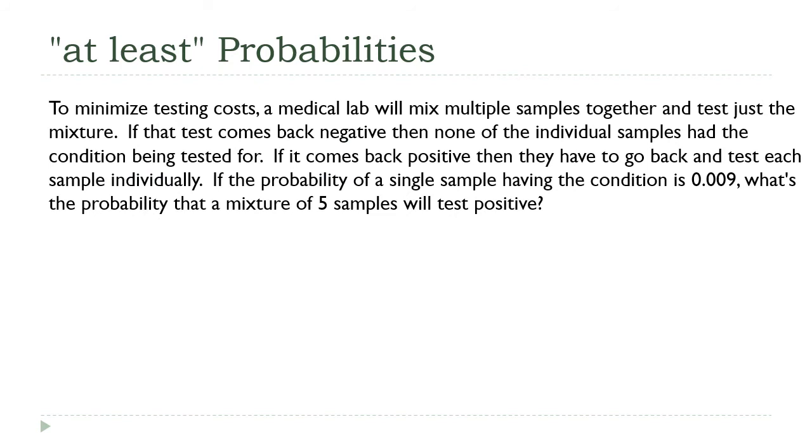Medical testing can be expensive. If you have a condition that you're testing for and that condition is rare, less than 1% of the population, then what you can do is take a bunch of samples, mix them together, and test the mixture. The likelihood is pretty high that it's going to come out with a negative result. None of the individual samples had the condition. Then you saved a lot of money. I'm talking about 5 samples here. Instead of paying 5 times the cost, you only paid it once.